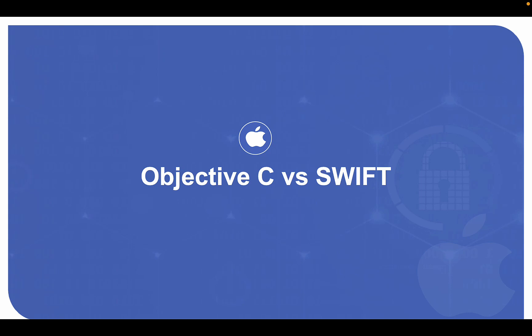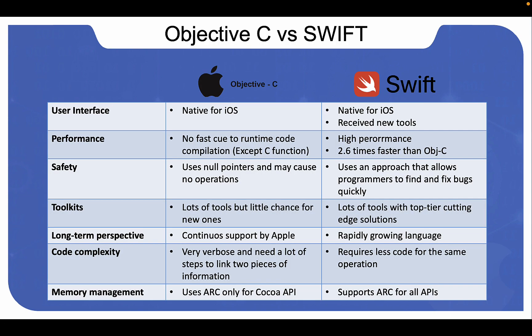We will now compare the two main programming languages for developing iOS and Mac applications. These are Objective-C and Swift. Objective-C has been known for more than 30 years, while in 2014 Apple introduced a newer, simpler language named Swift.